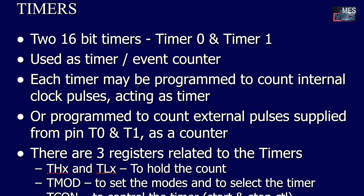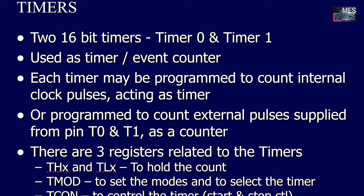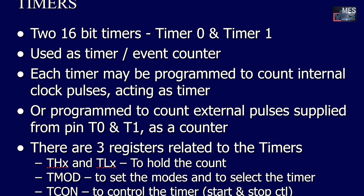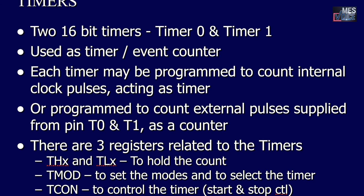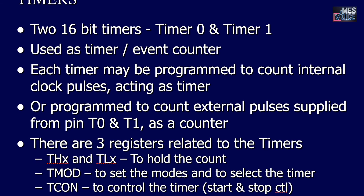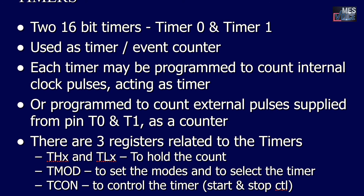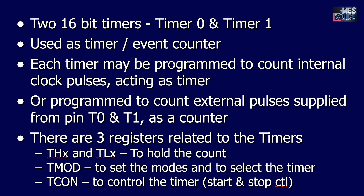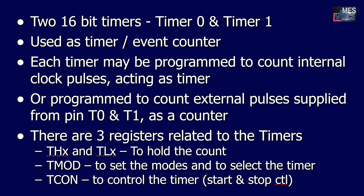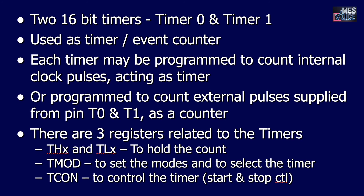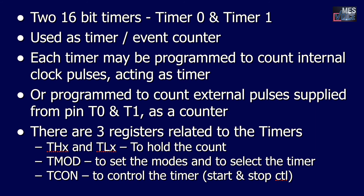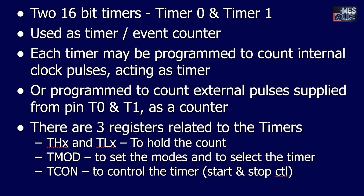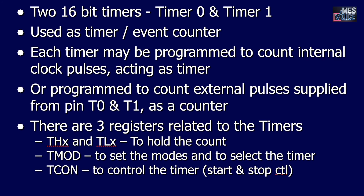There are two 16-bit timers: Timer 0 and Timer 1. They can be used as either a timer or as an event counter. Each timer may be programmed to count internal clock pulses, acting as a timer, or it can be programmed to count external pulses supplied from pins T0 and T1, acting as a counter. There are three registers related to the timers: THx and TLx to hold the count, the TMOD register to set the modes and select the timer, and the TCON register to control the timer — to start and stop it.